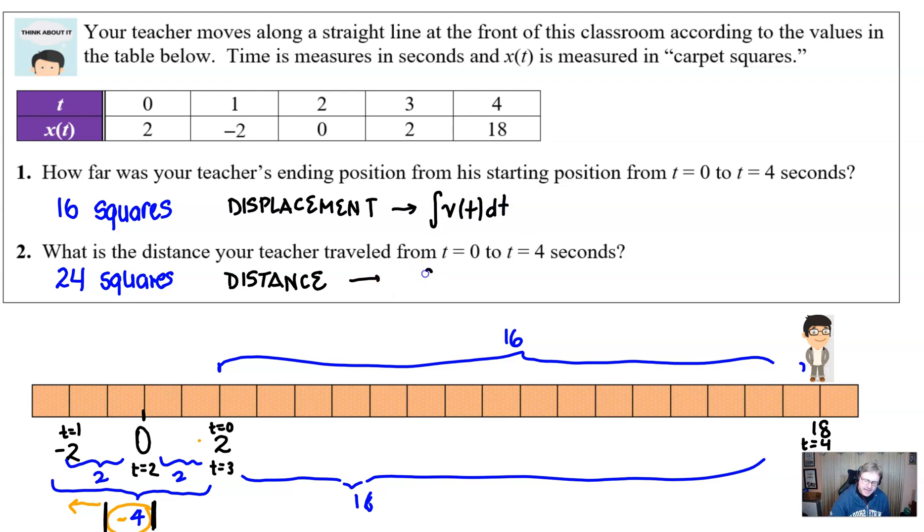Displacement is what happens when you integrate your velocity. But distance is what happens when you integrate the absolute value of velocity. And note, each one has some kind of boundary. Be really strong with those concepts. And you're probably looking at scoring an easy couple of points on a free response.